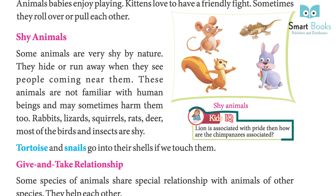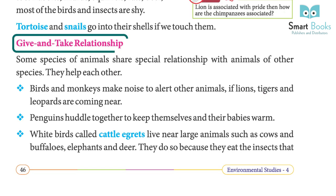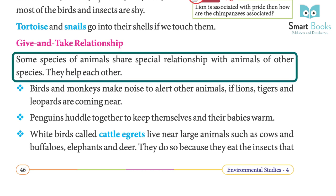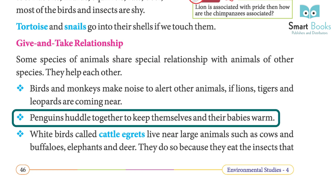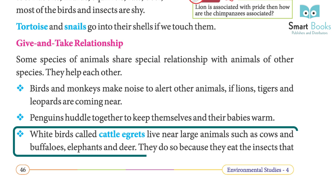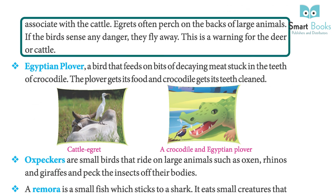Give-and-take relationships: some species of animals share a special relationship with animals of other species — they help each other. Birds and monkeys make noise to alert other animals if lions, tigers, and leopards are coming near. Penguins huddle together to keep themselves and their babies warm. White birds called cattle egrets live near large animals such as cows, buffaloes, elephants, and deer because they eat the insects associated with the cattle. Egrets often perch on the backs of large animals, and if a bird senses danger, it flies away — acting as a warning for the deer or cattle.